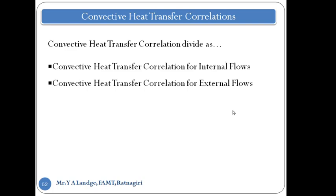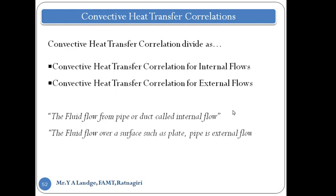As we learned in dimensional analysis for forced convection, we have three dimensionless numbers. From those three dimensionless numbers we make a correlation between the Nusselt number, Reynolds number, and Prandtl number. We try to get equations in terms of the Nusselt number, Reynolds number, and Prandtl number for forced convection and for internal flow. Fluid flowing through a pipe or duct is called internal flow, and fluid flowing over a surface such as a plate or pipe is called external flow.